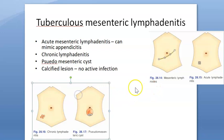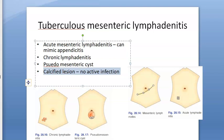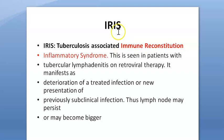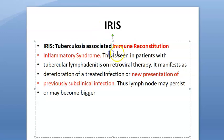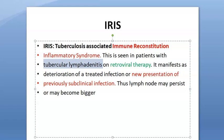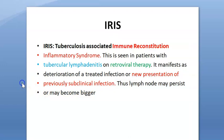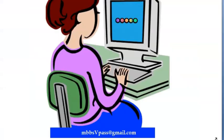In the calcified type, there is no active infection but infection is present. Lastly, IRIS — immune reconstitution inflammatory syndrome: if a patient is on antiretroviral therapy for HIV and also has tubercular lymphadenitis, they can develop IRIS, which is a new presentation of previously subclinical infection. The lymph node may become bigger. This is why when a patient has both AIDS and tuberculosis, you should treat the tuberculosis first.